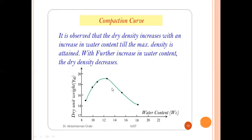It is observed that dry density increases with an increase in water content until the maximum density is attained. With a further increase in water content, the dry density decreases. The graph shows water content on the x-axis and dry unit weight or dry density on the y-axis — it increases initially and then slowly decreases as water content continues to rise.